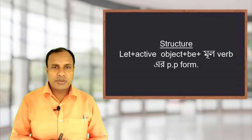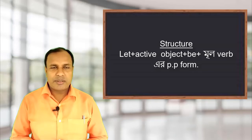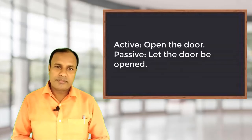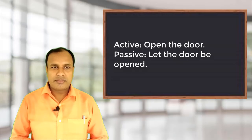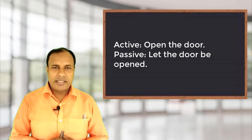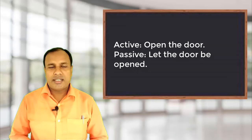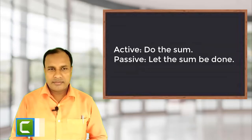The structure to change an imperative sentence from active to passive is: 'Let' plus active object plus 'be' plus main verb past participle form. For example: 'Open the door.' Passive becomes: 'Let the door be opened.' Another example: 'Do the sum.' Passive becomes: 'Let the sum be done.'